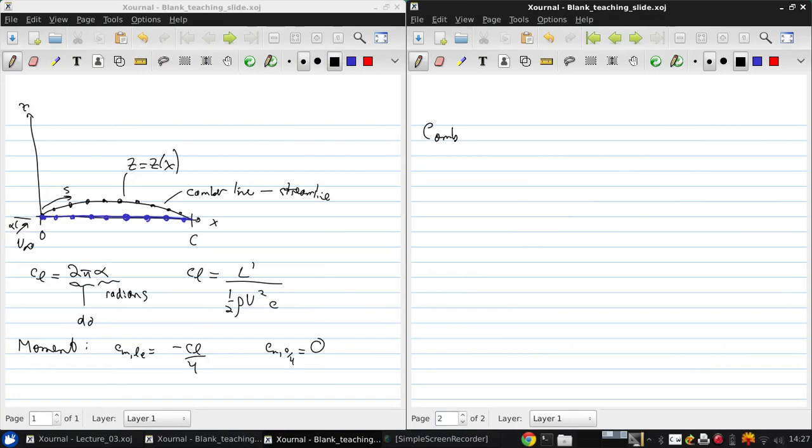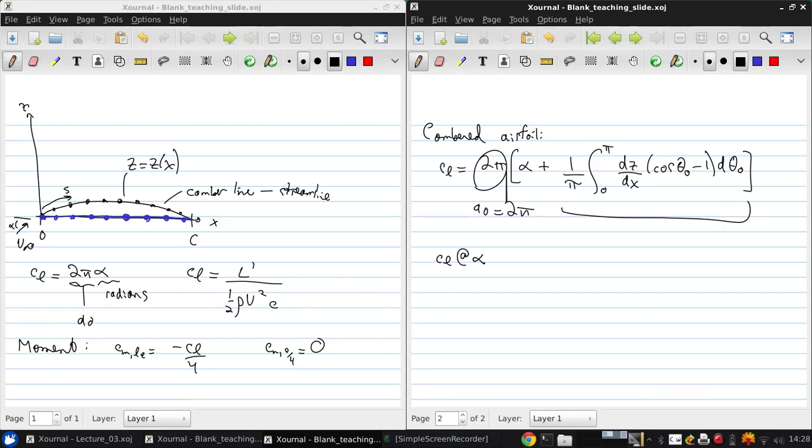Whereas for a cambered airfoil, such as the one that was shown here, we get a more complicated expression: Cl is 2π alpha plus 1 over π, and we go from 0 to π, dz/dx cos(θ₀) minus 1 cos(θ₀). So, again, we see that the lift slope is 2π. And the difference compared to the symmetric airfoil is the addition of the second term. The result of this is that Cl at alpha equals 0 is not 0 anymore.